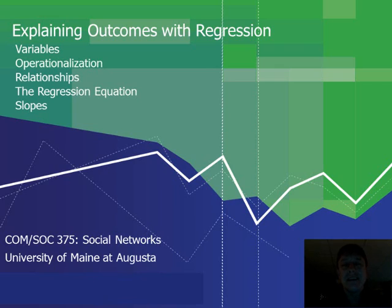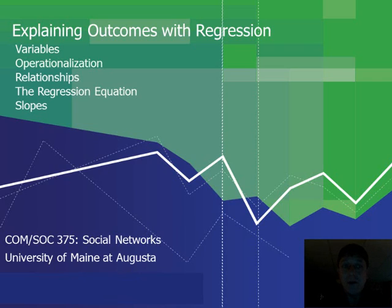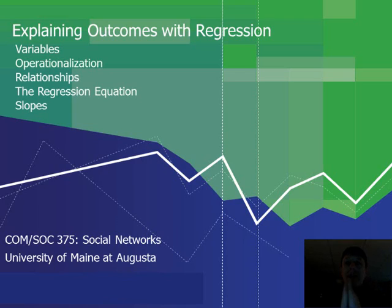If you've taken social science research methods and you're familiar with regression analysis, this should be quite familiar to you; otherwise it may not be. It never hurts to cover territory in more than one way. We'll be talking about in this video: variables, operationalization of variables, relationships between independent and dependent variables, looking at the regression equation and thinking about what that means, and looking more particularly at the slopes in regression equations.